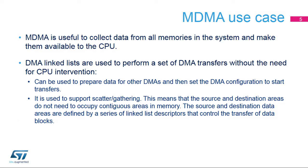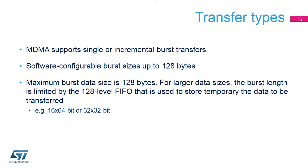MDMA is useful to collect data from all memories in the system, especially from memories on the Cortex-M4 side, and make them available to the main CPU. DMA linked lists are used to perform a set of DMA transfers without the need for CPU intervention, and can also be used to load configuration data into DMA-1 or DMA-2 registers and then start them. MDMA is used to support scatter and gathering, meaning that the source and destination areas do not need to occupy contiguous areas in memory. The source and destination data areas are defined by a series of linked list descriptors that control the transfer of data blocks.